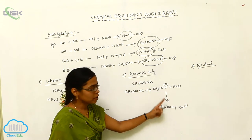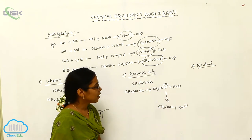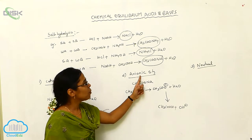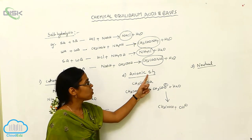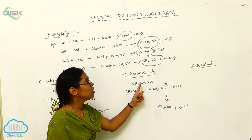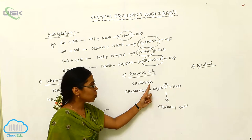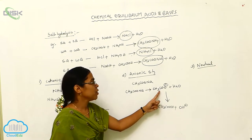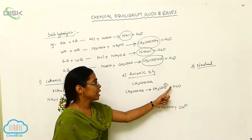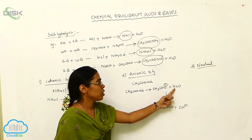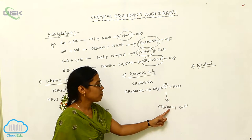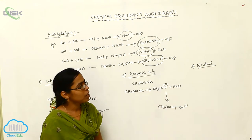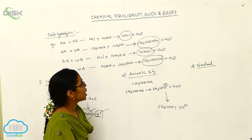That is called anionic salt hydrolysis. The example is sodium acetate. The acetate ion undergoes hydrolysis and forms acetic acid as well as OH⁻ ions.